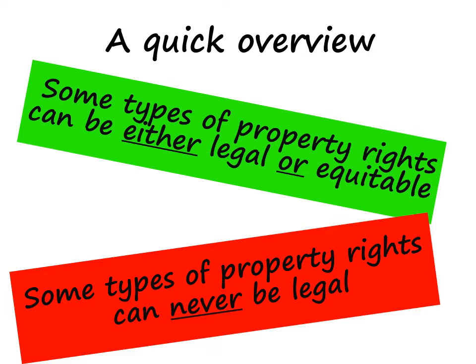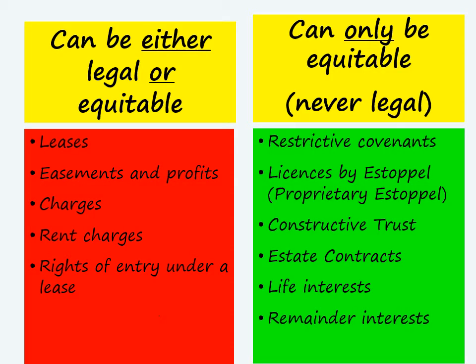On this slide I've set out the different property rights. In the red column we have rights which can either be legal or equitable, and in the green column we have rights which can only ever be equitable. But unless you plan to remember them all, what you need to know is how to work it out — it puts less pressure on you in the exam because there's less to remember. When answering a question on third party rights and their enforceability, your grade will be better because you'll get credit for showing how you've arrived at your conclusion. Law is like a maths exam — you have to show your working out.